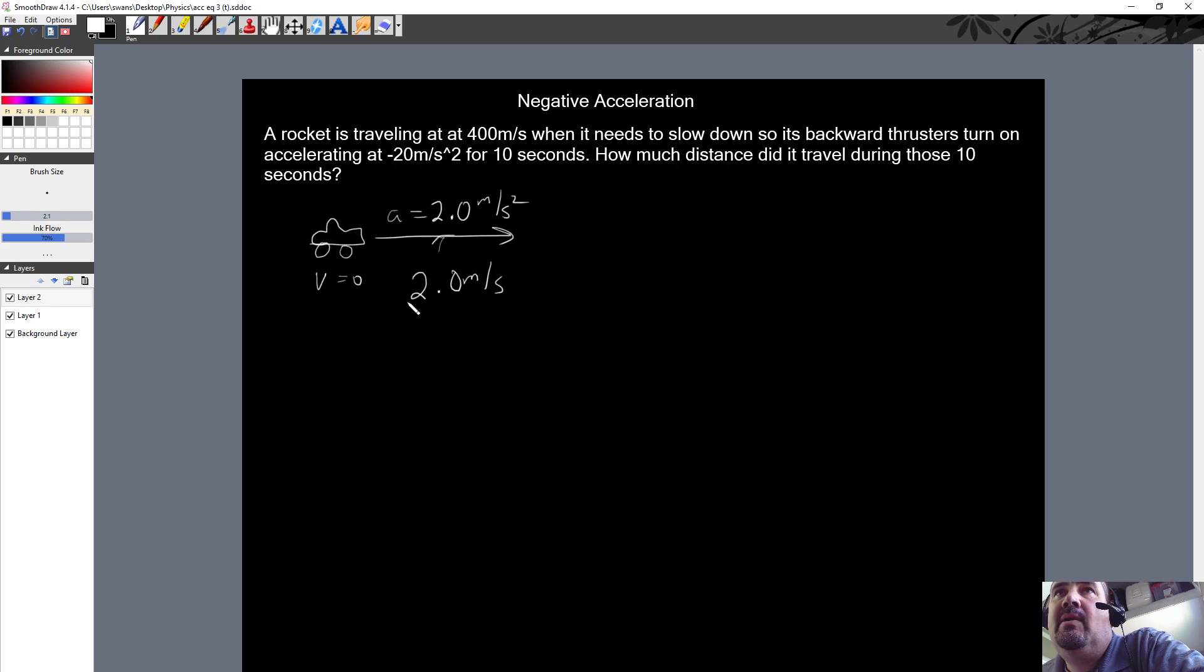That means that 2 meters per second of speed will be gained every second. So if they do this for 5 seconds, we times it by that 2.0, then their final speed will be 10 meters per second. That's what's going to happen.